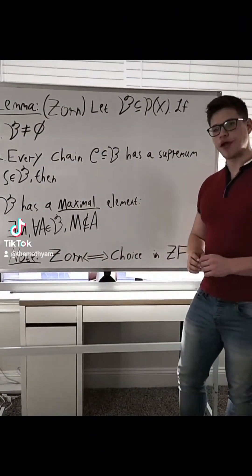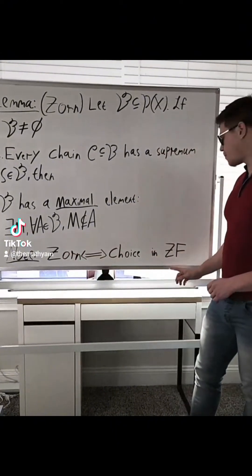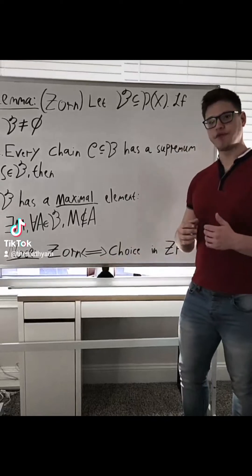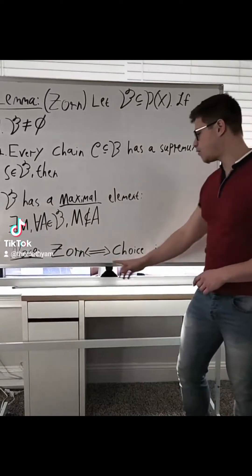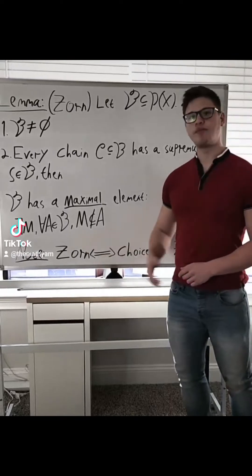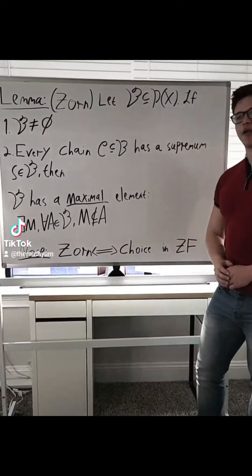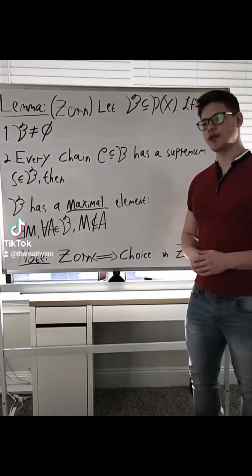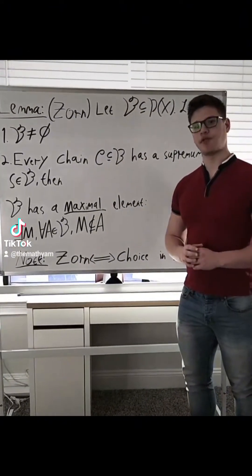Now, as a side note, inside of the standard axioms of Zermelo-Fraenkel set theory, the axiom of choice, which some of you might have heard of, is actually equivalent to the statement of Zorn's Lemma. Given one, we can prove the other inside the standard axioms. So now that we have this tool, let's see how we can use it to prove that every vector space has a basis.